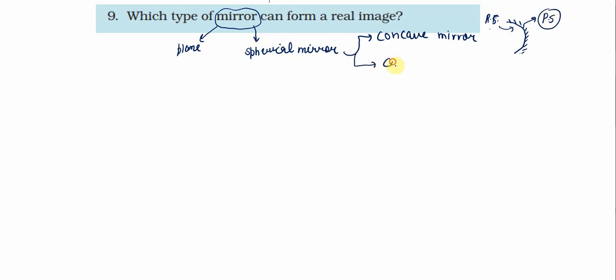And then we have a convex mirror. Convex mirror, this is the polished surface and this is the reflecting surface.